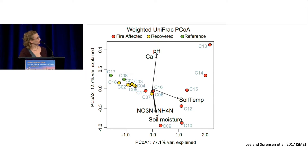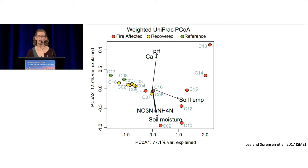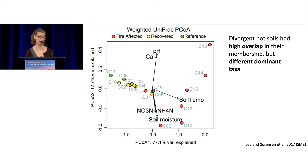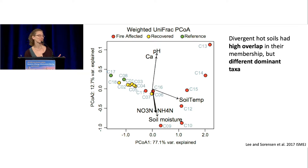Something really interesting: the fire-impacted soils show a large divergence explained by the second axis — they're very different from each other in community structure while all remaining distinct from ambient sites. Looking more carefully, we found that all fire-impacted soils had almost identical membership — the same taxa were present — but different dominant members. One fire-affected soil had one dominant member, another had a different one. So they differed in dominance, not composition. Put a pin in that, because it's going to be important.